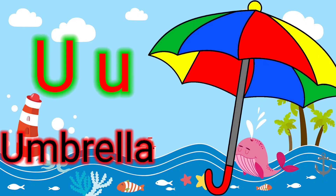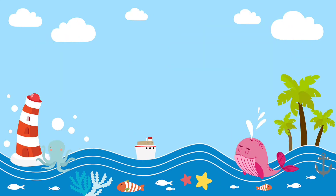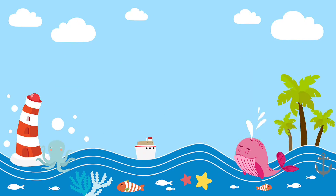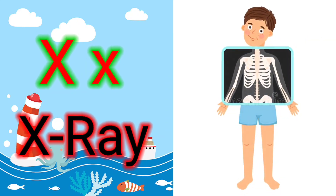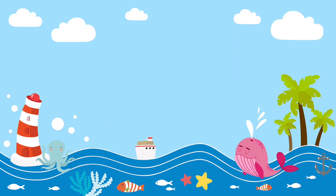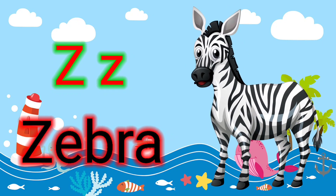U for umbrella, V for vegetable, W for watermelon, X for x-ray, Y for yo-yo, Z for zebra.